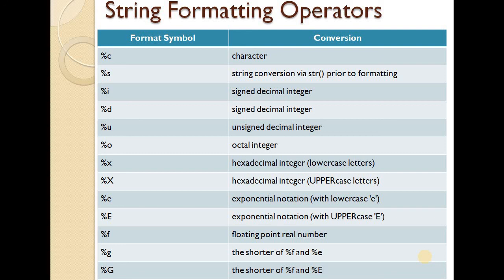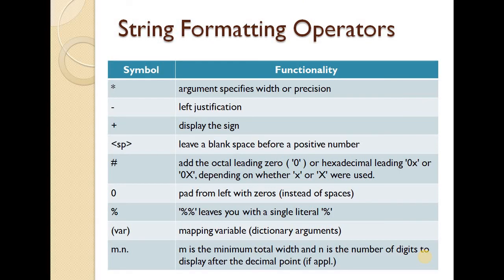These are the string formatting operators used similarly to C and C++. You can use star (*) arguments to specify the argument width. The minus (-) sign is for left justification, and 0 pads the field with zeros. The M specifies the minimum total width, and N is the number of digits to display after the decimal point.